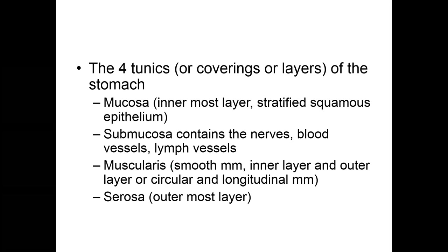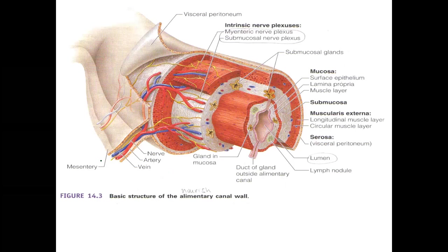The stomach has four layers or tunics. The innermost is the mucosal layer, then the submucosal layer, then the muscularis, and the outermost is the serosa. The mucosal layer has special glands that produce mucus. The submucosal layer contains nerves and blood vessels. The muscularis is smooth muscle with circular and longitudinal layers that help break down food — like a blender.